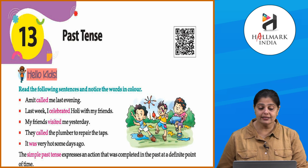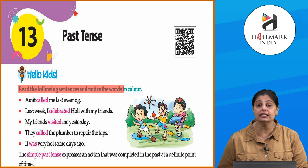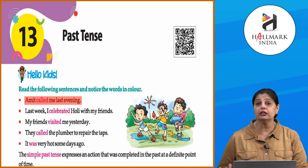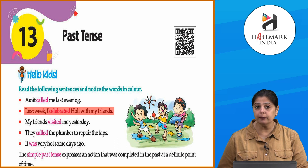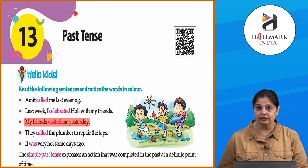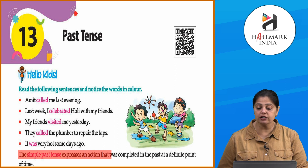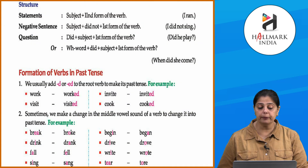As we did present perfect tense, you saw the difference between simple past tense and present perfect tense. In present perfect tense we do not specify time, but in past tense we specify when the action occurred. For example: Amit called me last evening — we are talking about a specific time. Last week I celebrated Holi with my friends. My friends visited me yesterday. It was very hot some days ago.